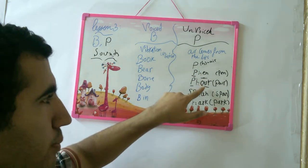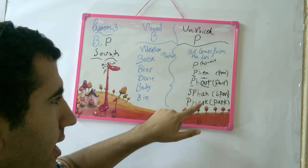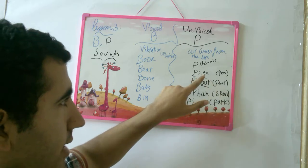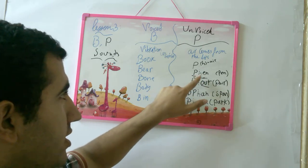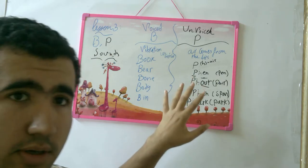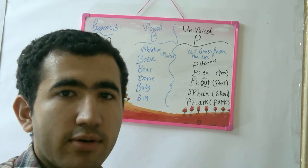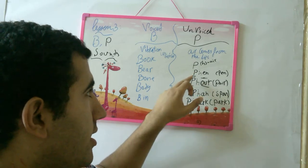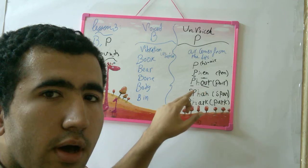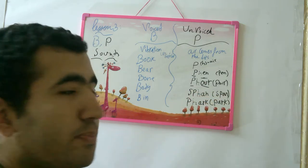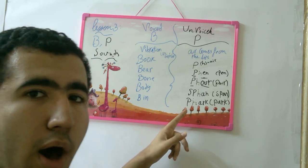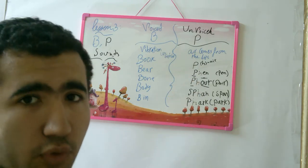Pen, pour, span, park. Again: pen. So there's an itch here — you imagine there's an itch, but there's no itch in the word; there is itch in the sound. Pen, pen, pour, pour, span, span, park, park. This is the unvoiced sound.